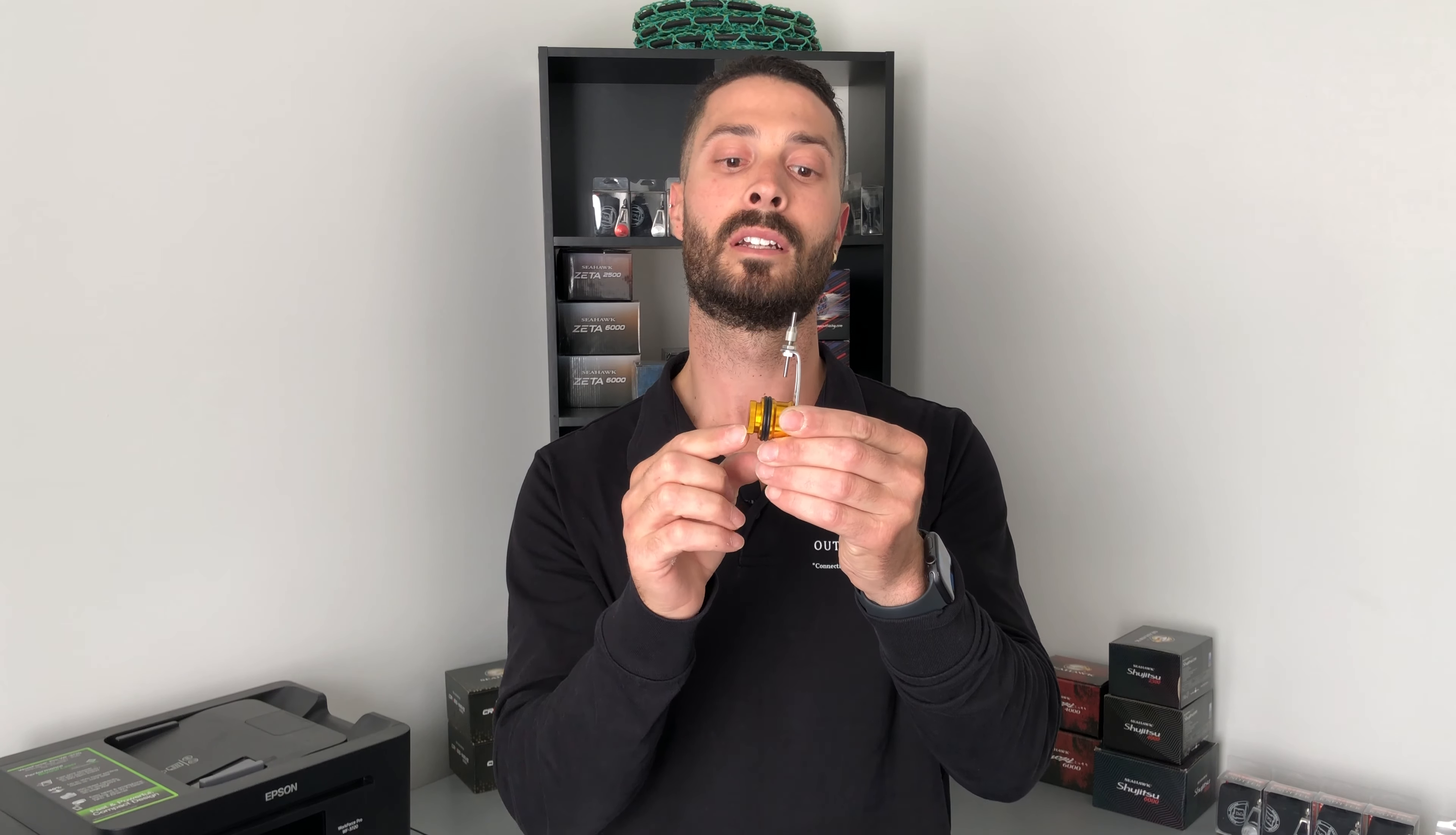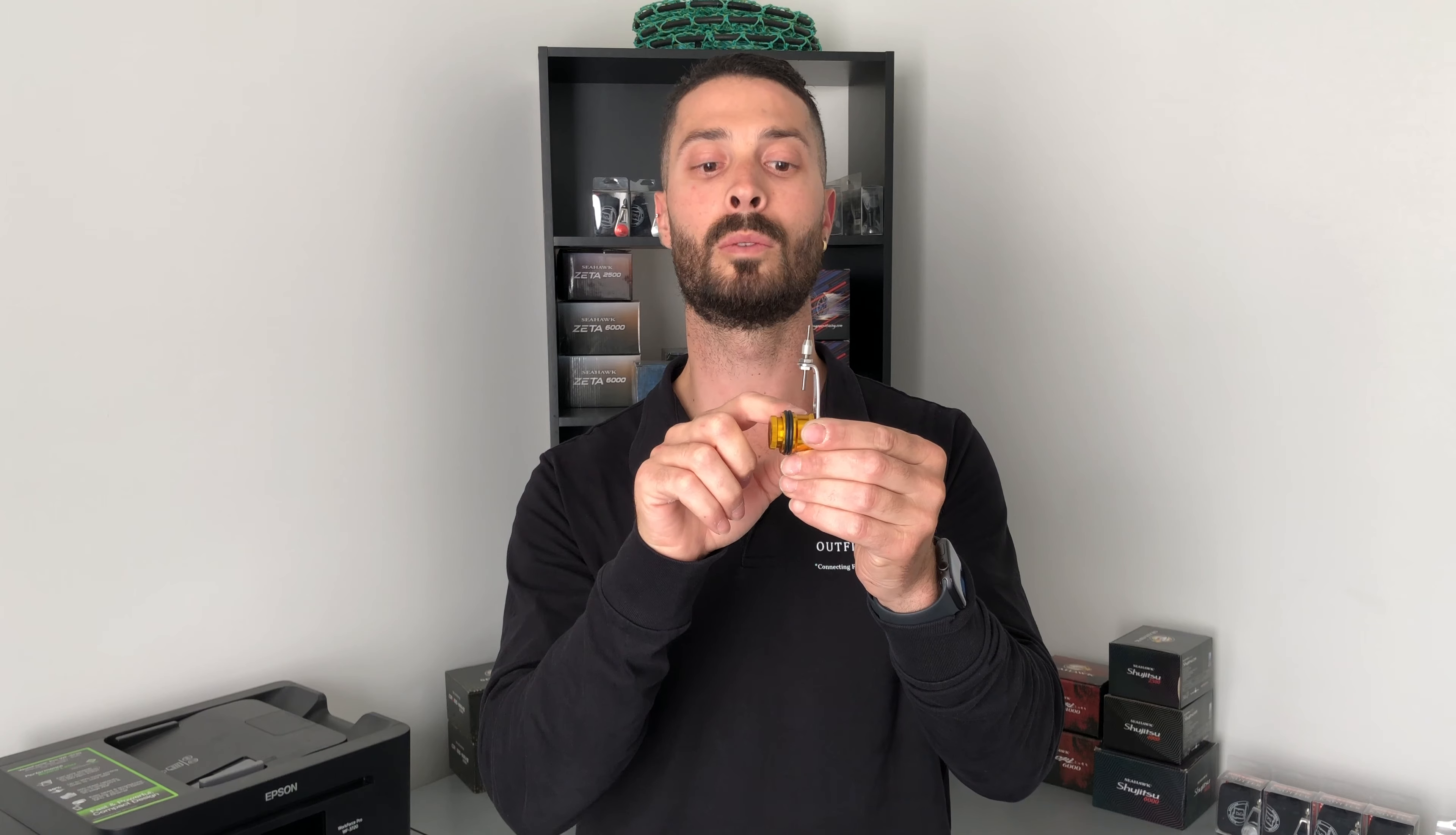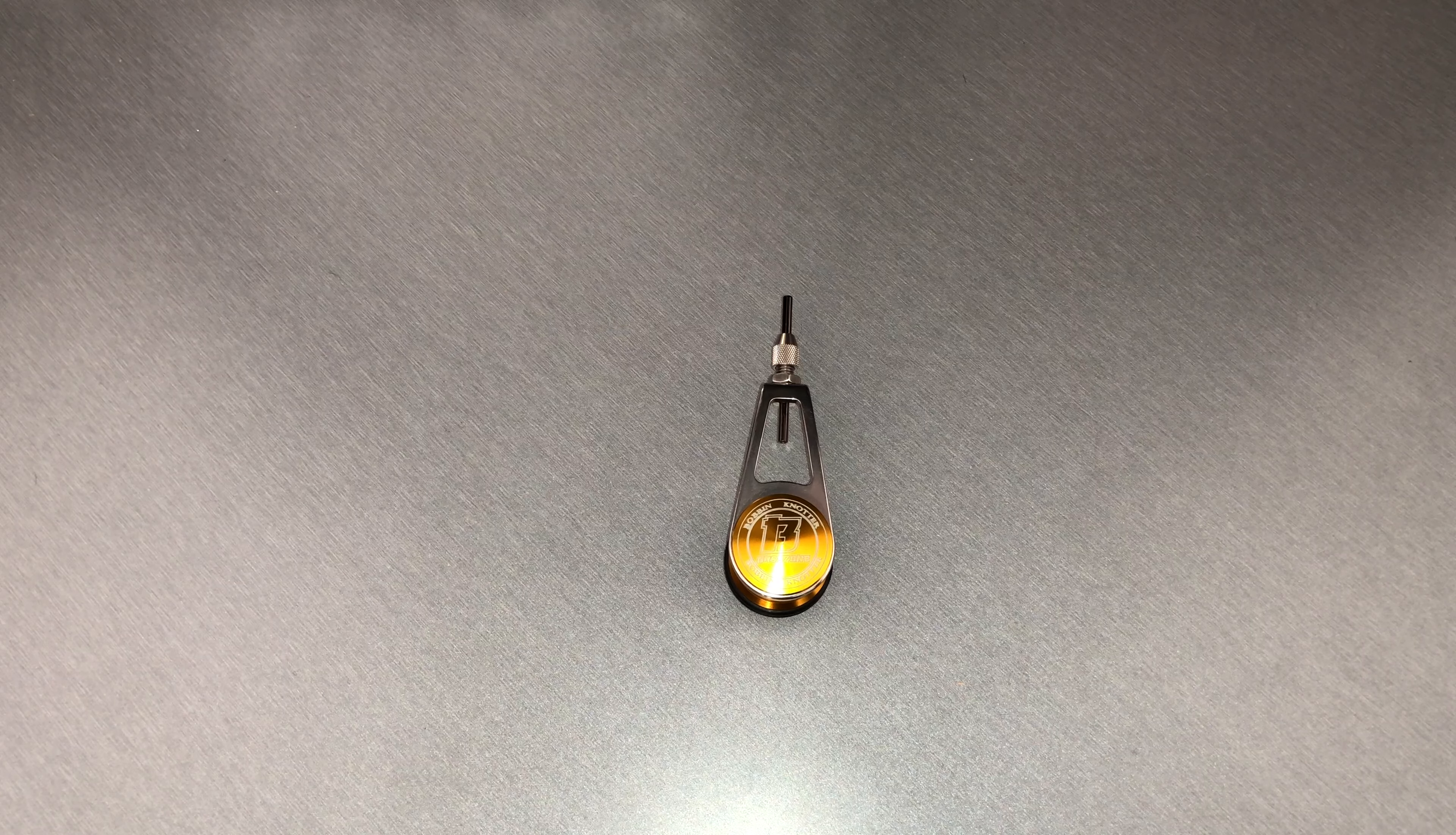And it's got a little tensioner on the side here that just controls the rate that the line comes off of the bobbin spool. It's a good little unit, I've got the link to it in the description, and it's a fraction of the cost compared to some of the other big name brands out there. So if you want to check it out, go for it. Other than that, let's dive in.